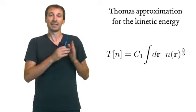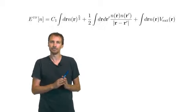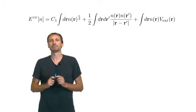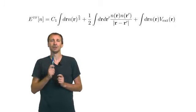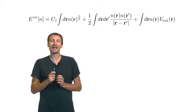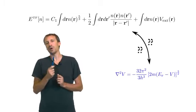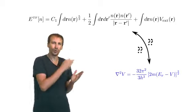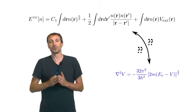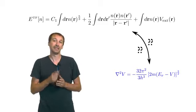What is certain is that now we have a full energy functional of the density. Let's have a look over here. This is the expression of the total energy, in the Thomas or Thomas-Fermi approximation, written as a density functional. And the question is, how to recover the old Thomas formula, how to connect the two?